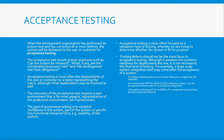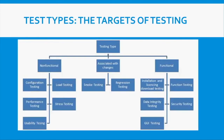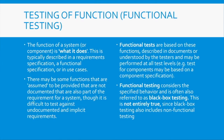Acceptance testing is not about finding bugs at this point. So having covered unit testing, integration testing, system testing, and acceptance testing, we're now going to move into test types. What are the targets of testing? The first is functional testing.